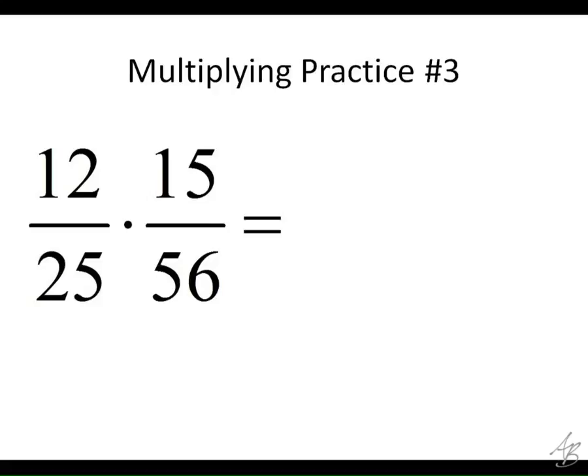All right? We're going to have to multiply 12 times 15, which is 180. Don't write this down, please. So we get 180 on top, and on the bottom, 25 times 56 is going to be 1,400. And then we would have to reduce that fraction. Doesn't look like fun, does it? No. Now, you may not think the other way is very fun either, but it's going to be a lot easier than simplifying those big numbers. All right? So the first thing we want to do is we want to see if the 12 reduces with either the 25 or the 56.